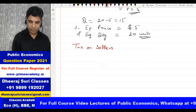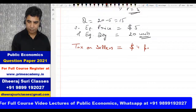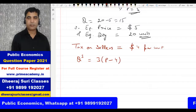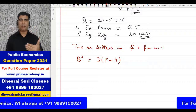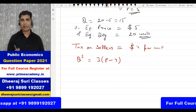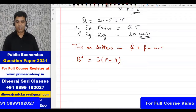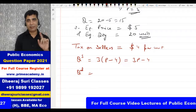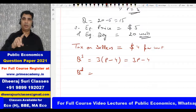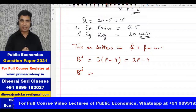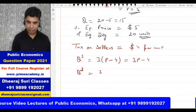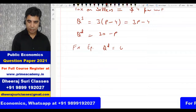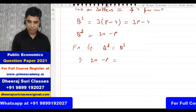The tax on sellers is $4 per unit, so the supply function becomes QS = 3(P minus 4). The sellers effectively receive less by the amount of the tax. For the new equilibrium, we set QD equal to QS: 20 minus P = 3P minus 12.